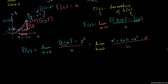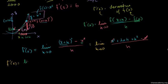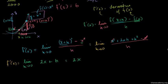Now let's simplify. You immediately see you have an x squared and a minus x squared — those cancel out. And then we can divide the numerator and denominator by h. So we get f prime of x equals the limit as h approaches 0 of 2x plus h. If you take the limit as h approaches 0, that h just disappears. So this is just equal to 2x. We just figured out that if f of x is equal to x squared, then f prime of x is equal to 2x.